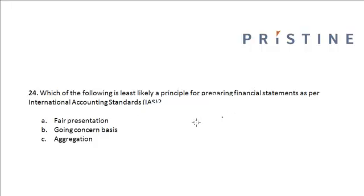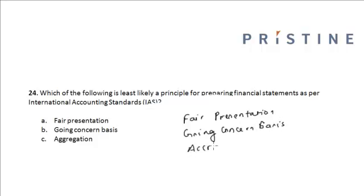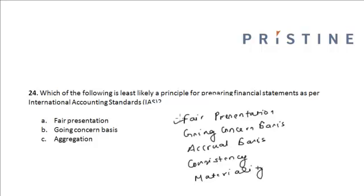These include fair presentation, going concern basis, accrual basis, consistency, and materiality. Fair presentation means faithfully representing the effects of an entity's transactions and events according to the standards for recognizing assets, liabilities, revenues, and expenses.